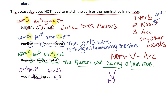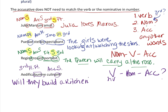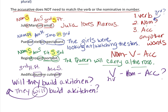For a question in English, we put the helping verb first. The helping verb is 'will' because it's future tense. Then the pronoun 'they,' then the accusative. So: 'Will they build a kitchen?' A helpful trick: if you're unsure how to form the question, make it a statement first — 'They will build a kitchen' — then move the helping verb to the front: 'Will they build a kitchen?'